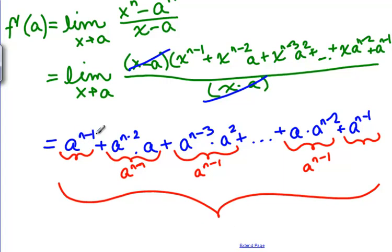Well, we started up here with X to the N minus 1 and we ended with X to the 0. So from 0 to N minus 1, that's N terms.